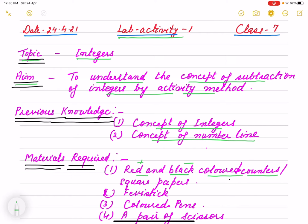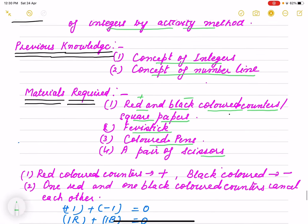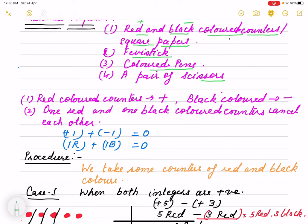So you can take square papers also. We will take favistik or favicol, colored pens and scissors, because you will cut counters or if you are taking bindi you will paste it.